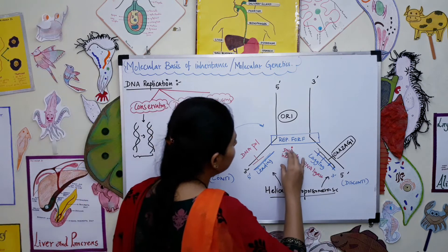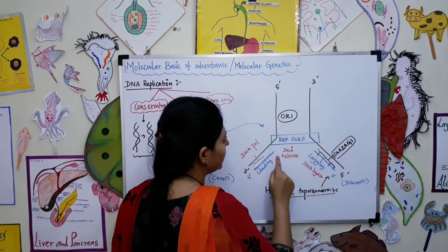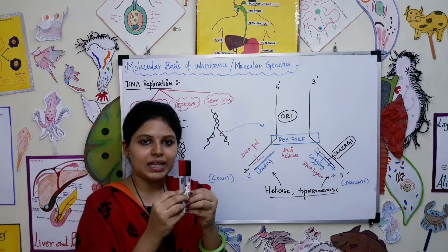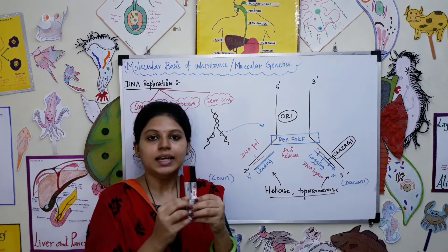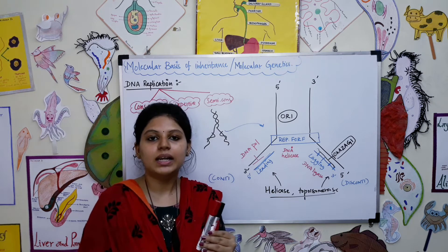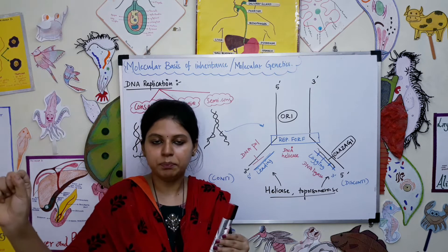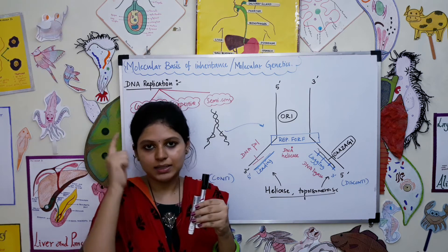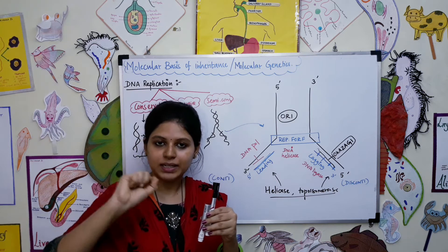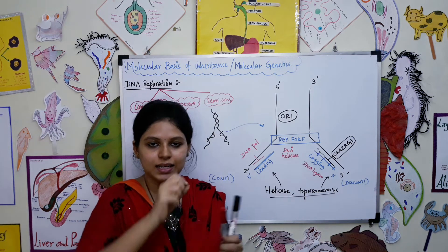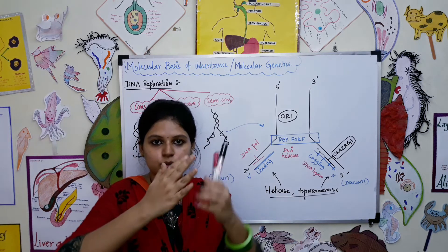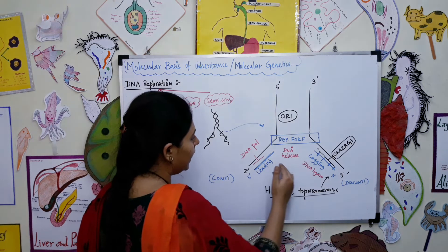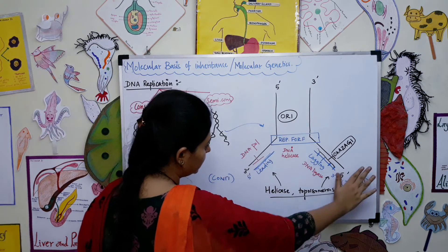The first enzyme is DNA helicase. It works almost like a zipper — imagine a zip as a DNA molecule, and the zipper mechanism is the DNA helicase. As it moves along, the strands start separating. So DNA helicase is responsible for unwinding and separating the two DNA strands.